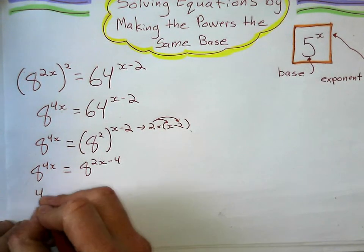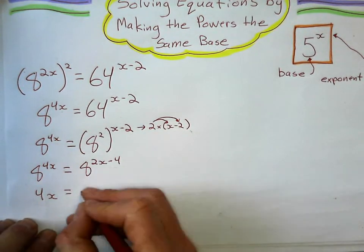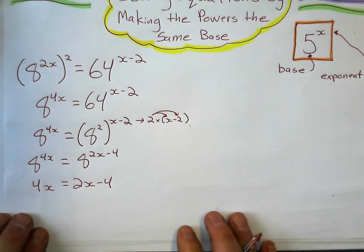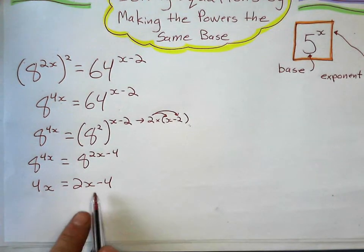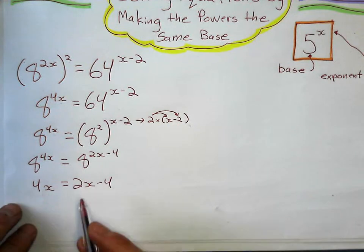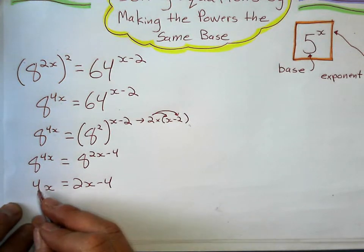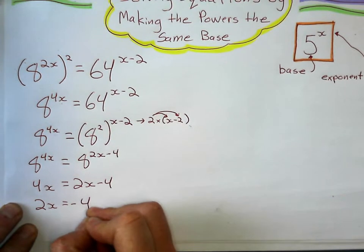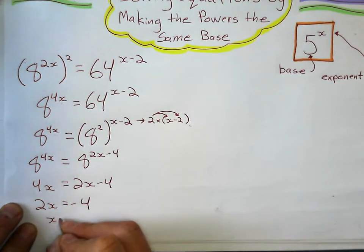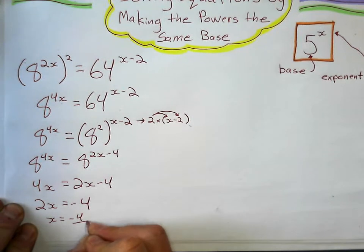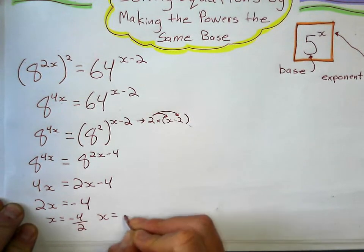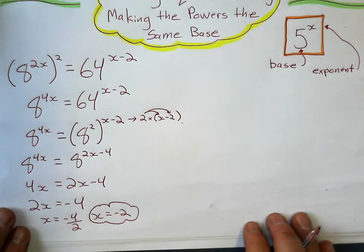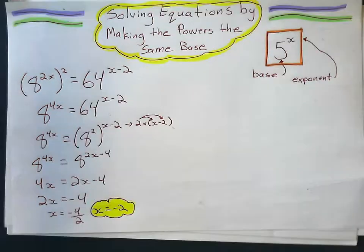So I set these exponents equal to each other. 4x is the same as 2x minus 4. And I don't need logarithms to solve for x because I just have a linear equation. Subtract the 2x over there. 4x minus 2x is 2x equals negative 4. And x is going to equal negative 4 divided by 2, which gives me negative 2.